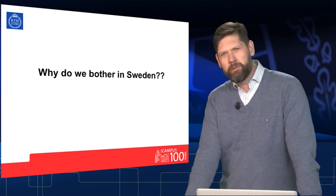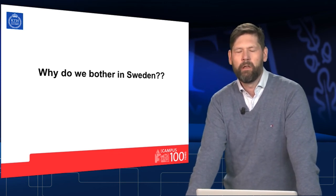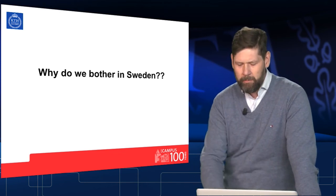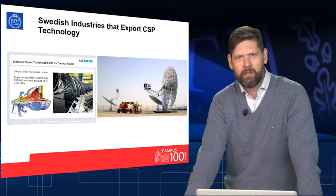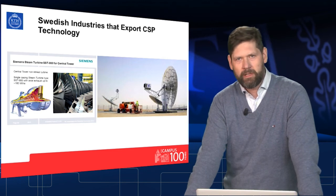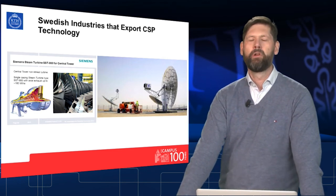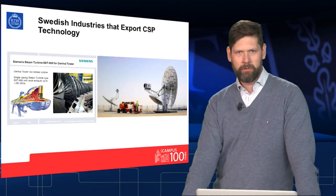Why do we bother in Sweden? Will we have large solar power plants installed in Sweden? The answer is no. But we bother in Sweden because we have companies that provide technologies to improve the efficiencies and cost levels of these solar power plants. For example, Siemens, located in Finspång, and Cleanergy, located in Gothenburg — they both produce components for solar power plants.